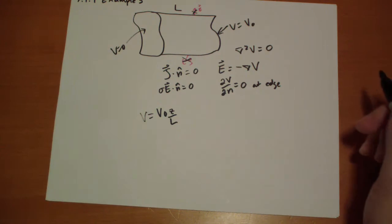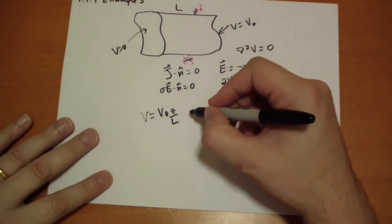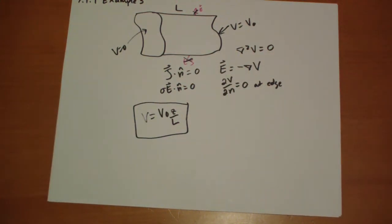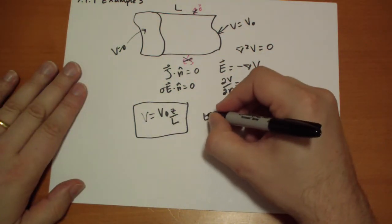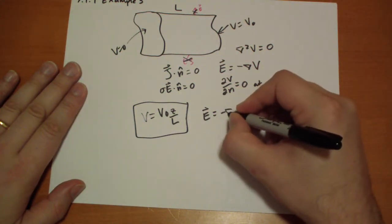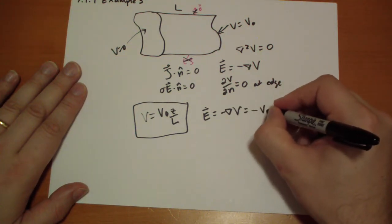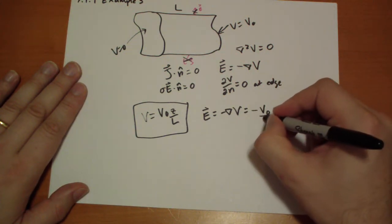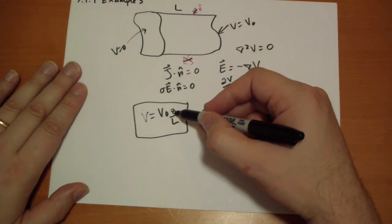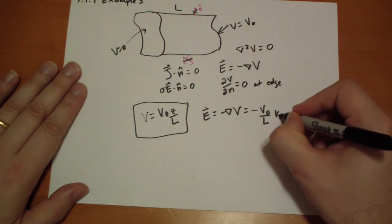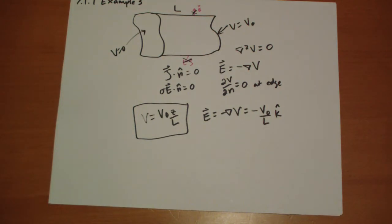And since this is a solution, the uniqueness theorem says this is the solution. And so our E vector is going to be negative the divergence of V, so that's minus V naught over L, and we only have the d by dz in the k hat direction. So that's our E vector.